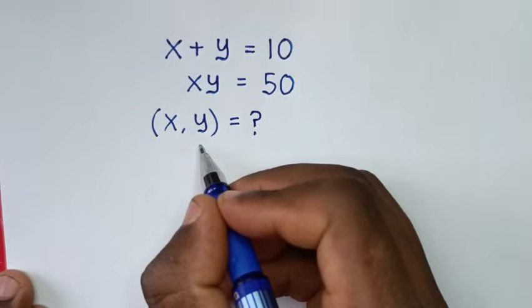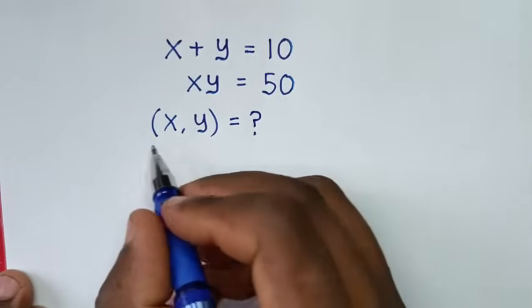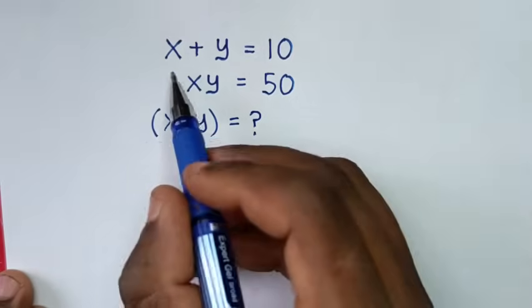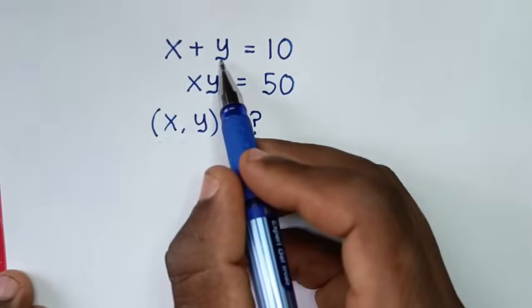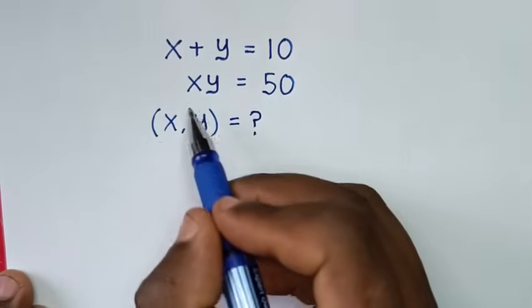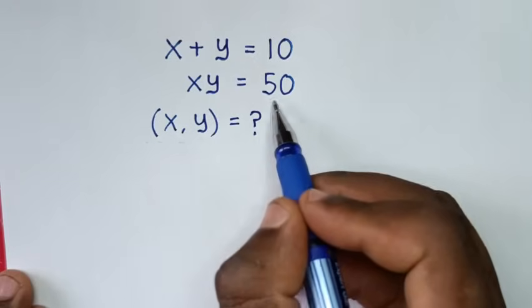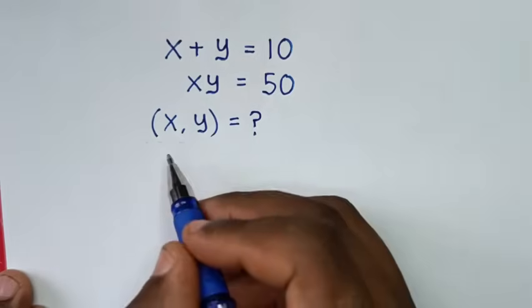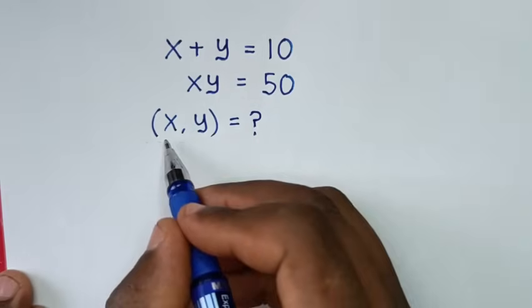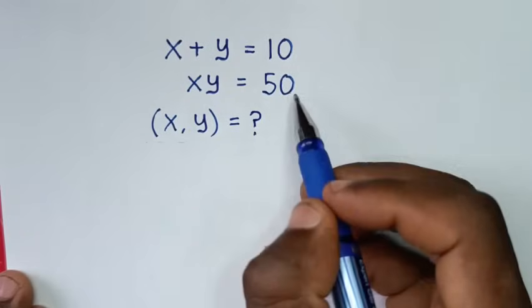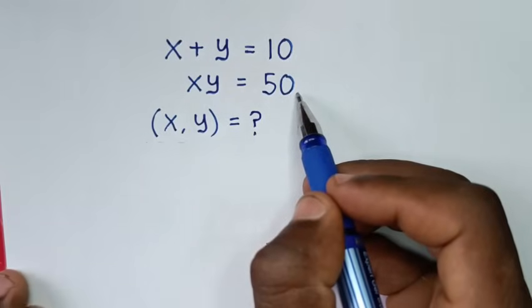Hello, you are welcome to solve this math problem which is x plus y is equal to 10, and x times y is equal to 50, to find the values of x and y from these two systems of equations.